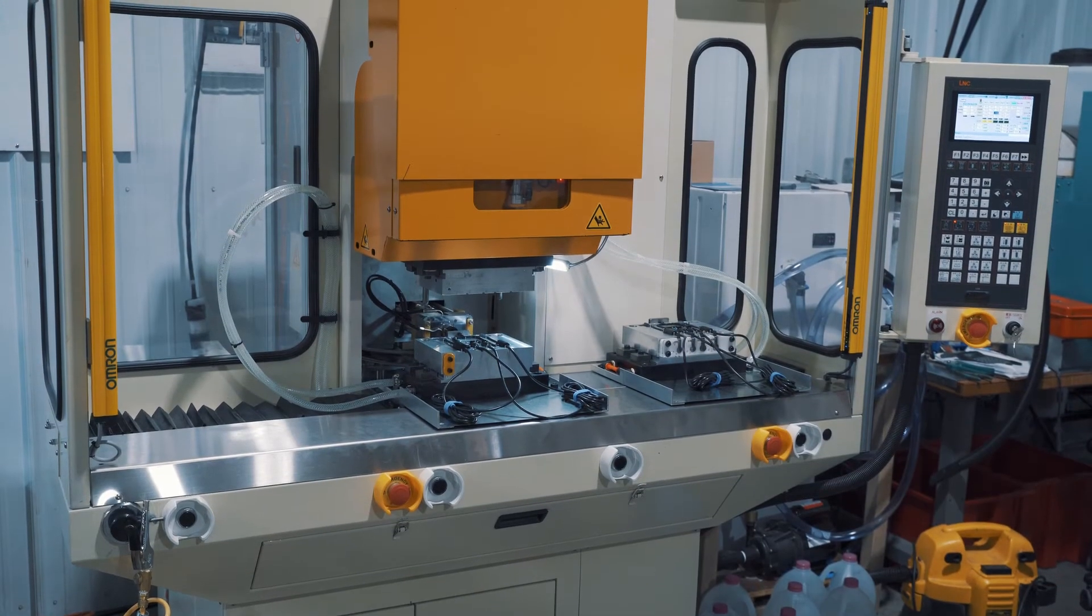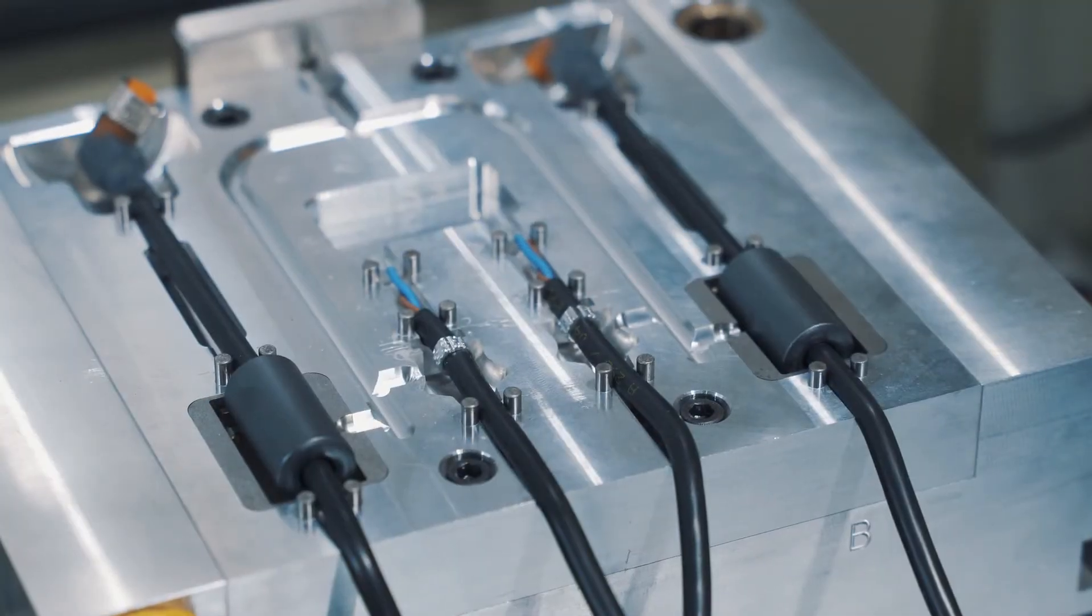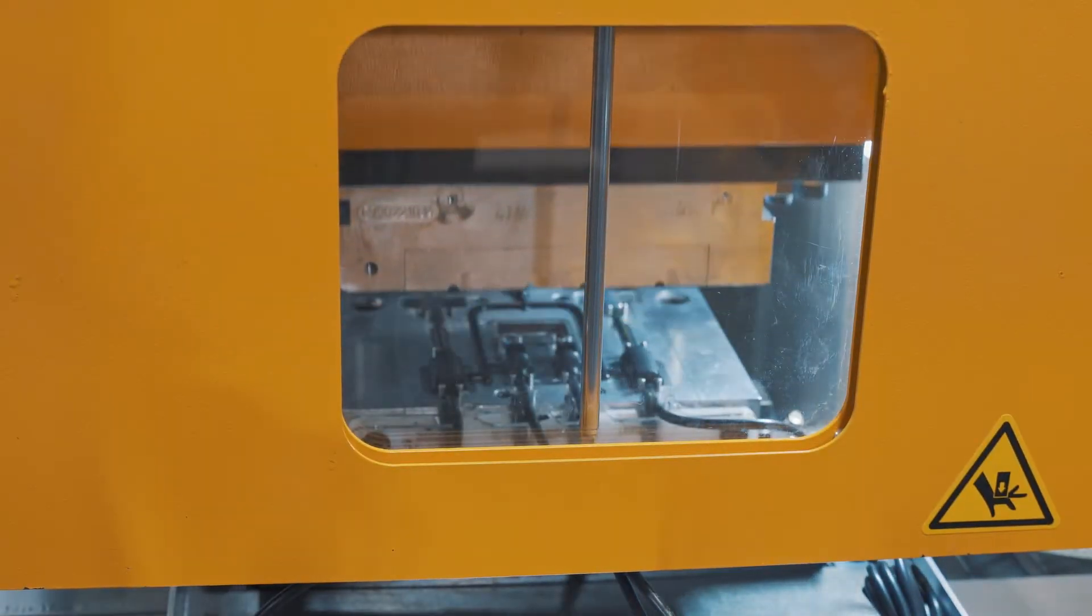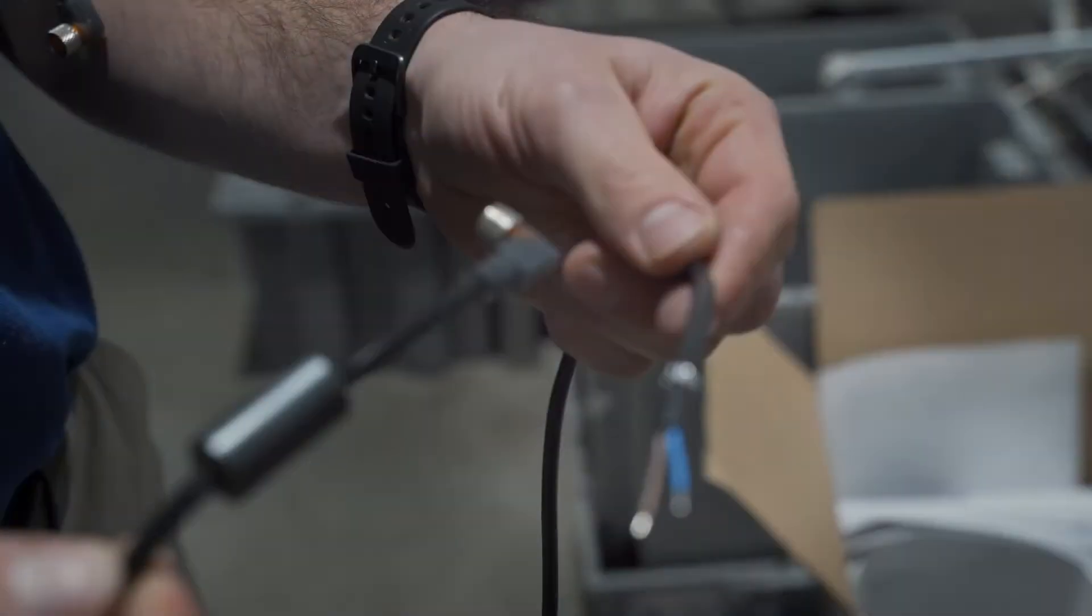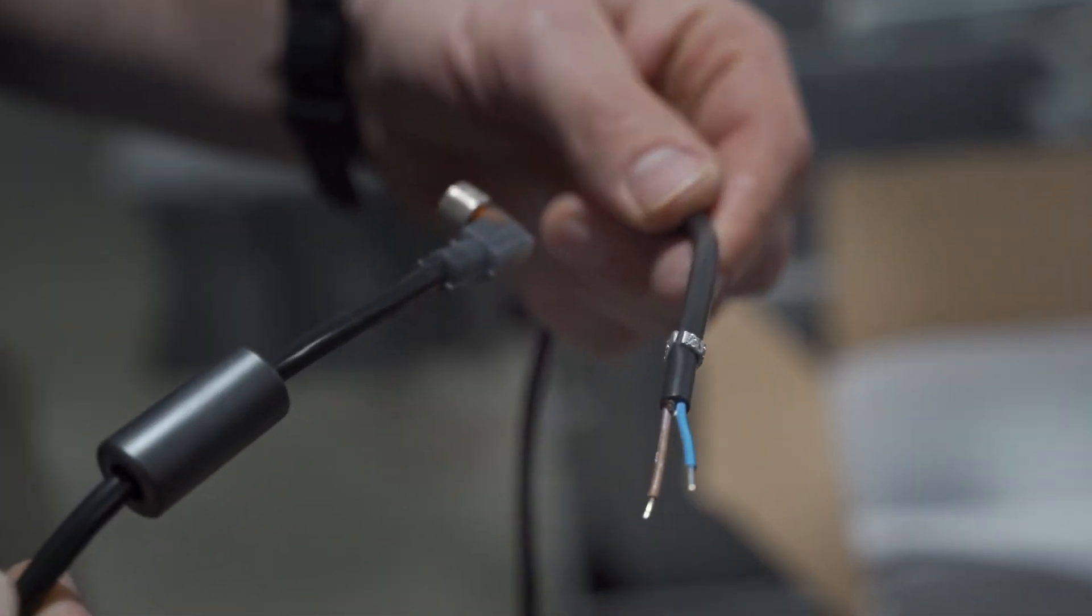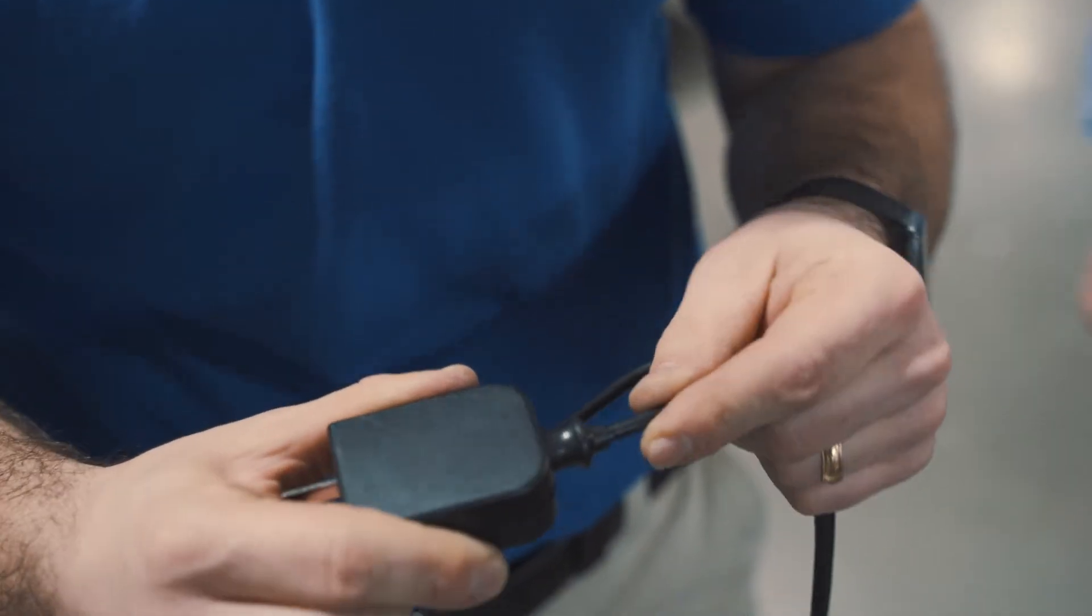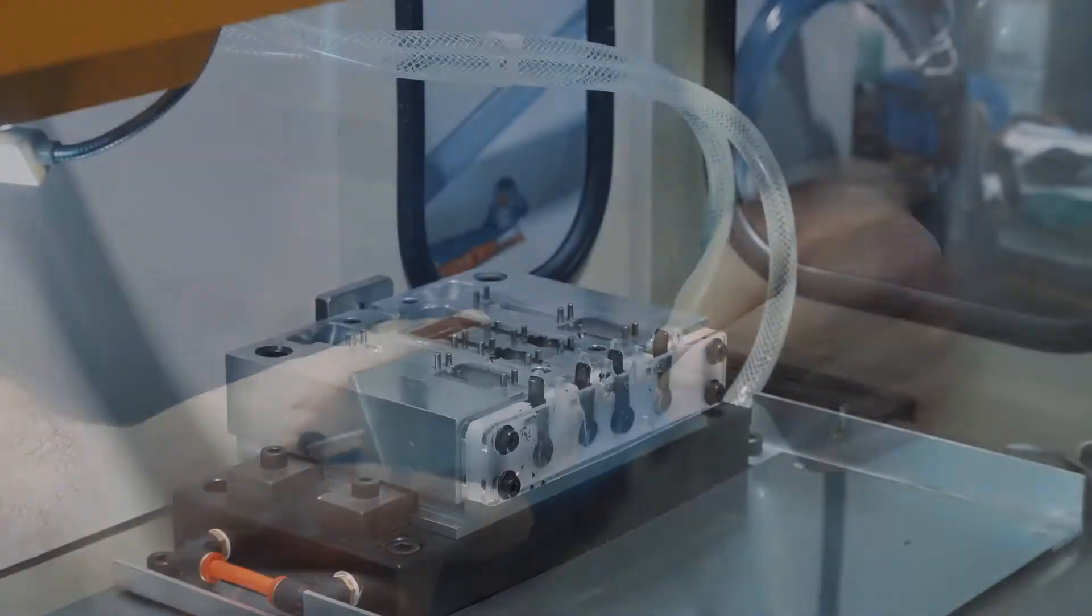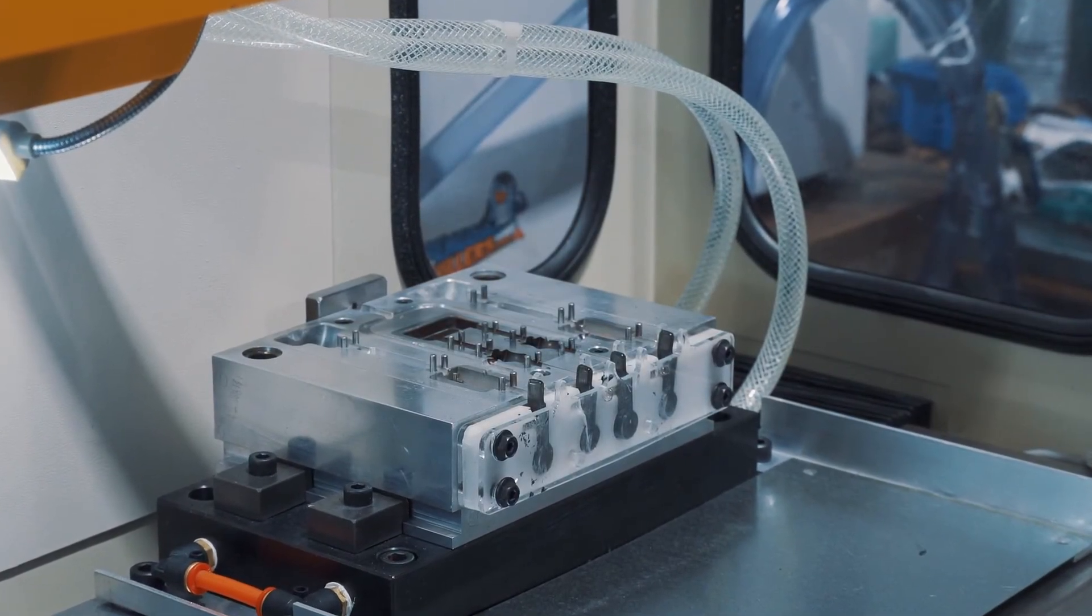Another technique is overmolding. The cable assembly is placed into a mold, and then resin is injected into the mold to encase the cable and connector. The overmolding can be completely customized with respect to size, shape, and material. It provides a strong and water resistant strain relief. The main drawback is the upfront investment needed to design and build the mold.